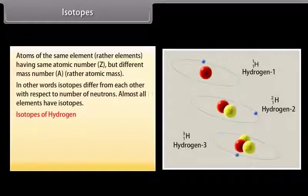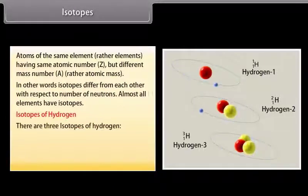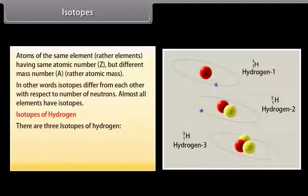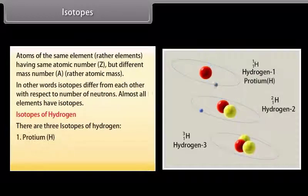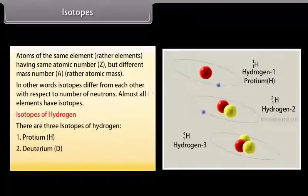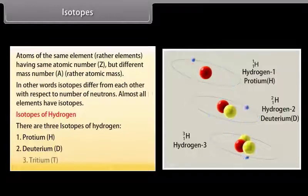Isotopes of hydrogen: there are three isotopes of hydrogen — 1. Protium, 2. Deuterium, 3. Tritium.